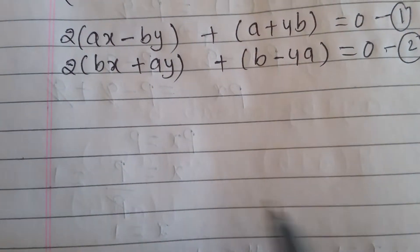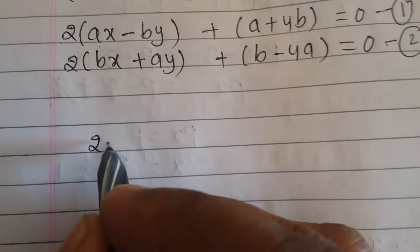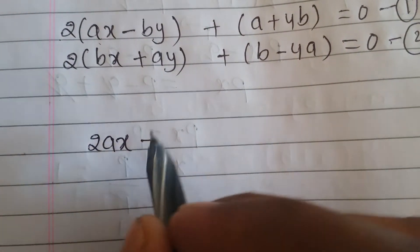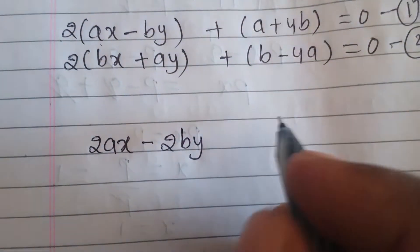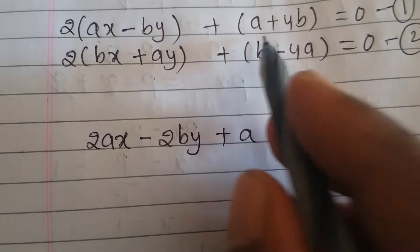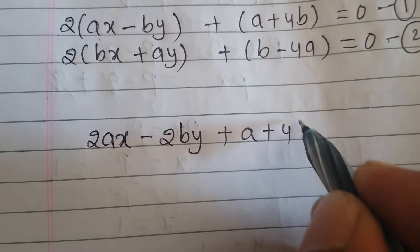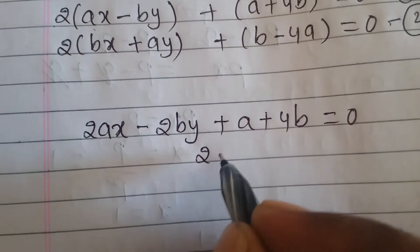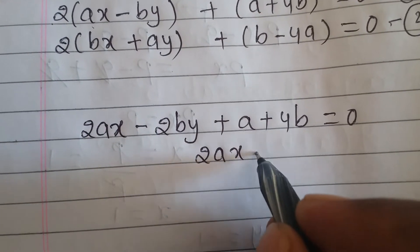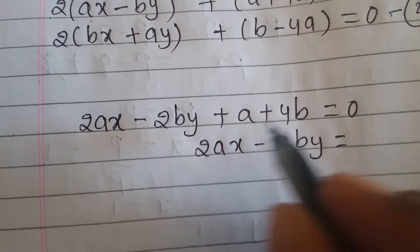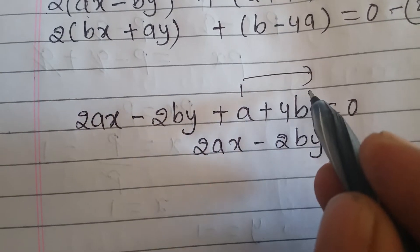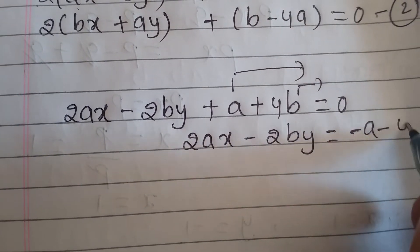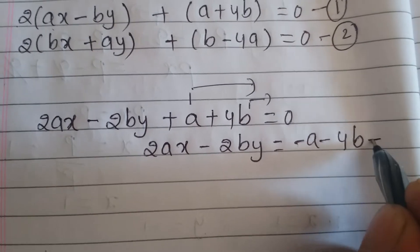Expanding equation one: 2 into a gives 2ax, plus into minus gives minus, 2 into b gives 2by, then remove the brackets and write outside. So we get 2ax minus 2by equal to — transposing a plus 4b to the right side gives minus a minus 4b. Let this be equation number three.